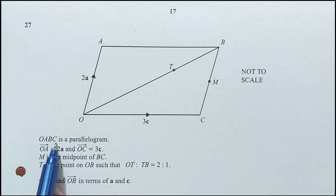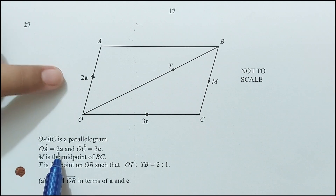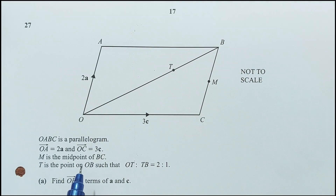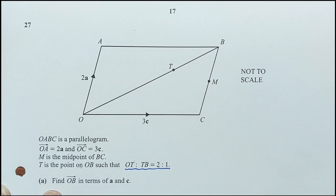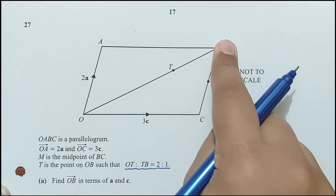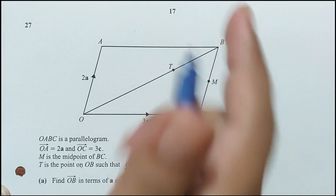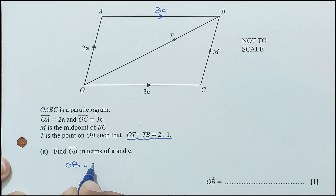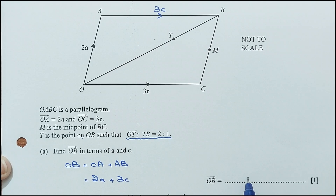Question 27: OABC is a parallelogram with OA = 2a and OC = 3c. M is the midpoint of BC and T is the point on OB such that OT : TB = 2 : 1. Part A: find OB in terms of a and c. Following path O → A → B: OA = 2a and AB = 3c (parallel to OC). So OB = 2a + 3c.